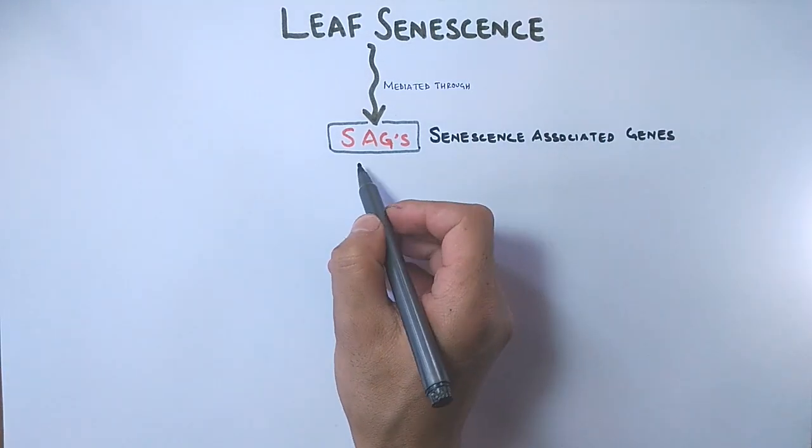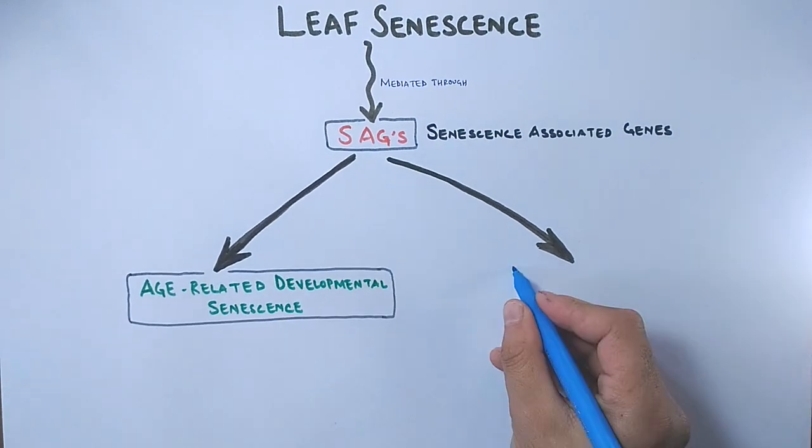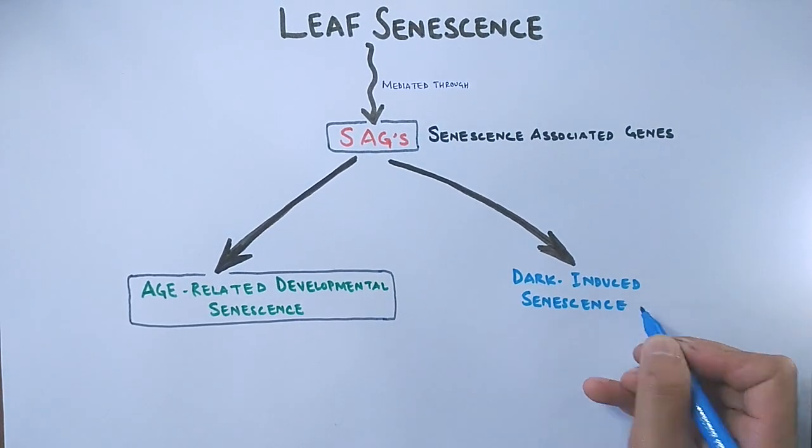To classify this senescence process, we see it has got two types. One is the age-related developmental senescence and the second one is dark-induced senescence.